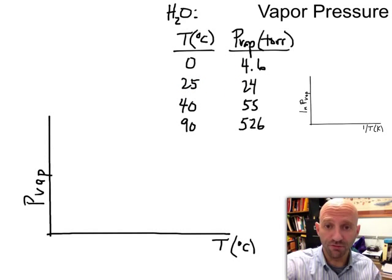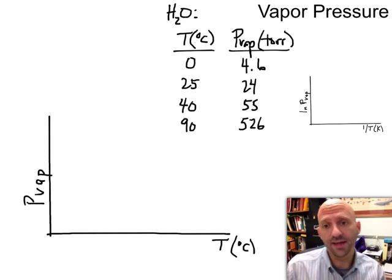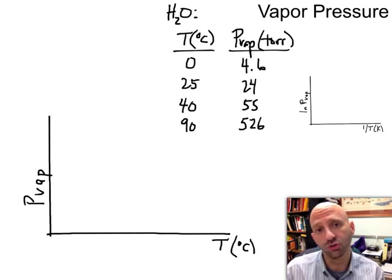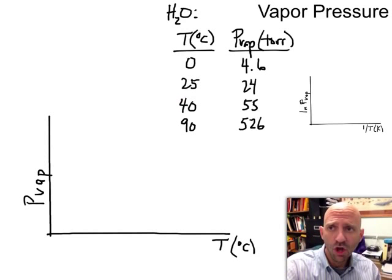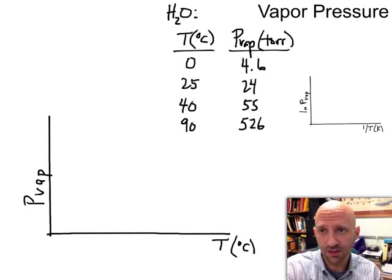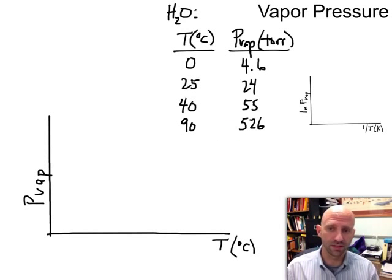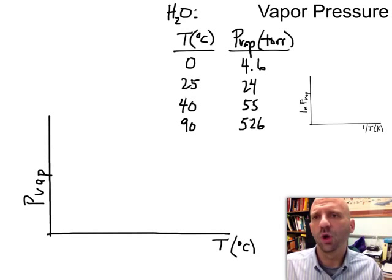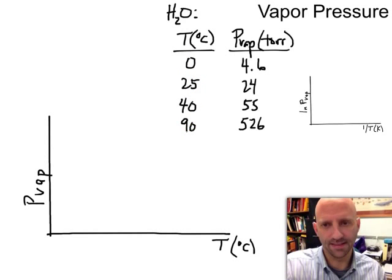So what we can see is at zero degrees water has a pretty darn low vapor pressure about 5 torr. 25 it's about 24 torr. We actually saw that in a previous video when we talked about measuring vapor pressures using barometers. 40 degrees here it's about 55 torr. 90 degrees it's 526. So one question I have to start with is where are these numbers headed? Where are these temperatures headed and where are these vapor pressures headed?